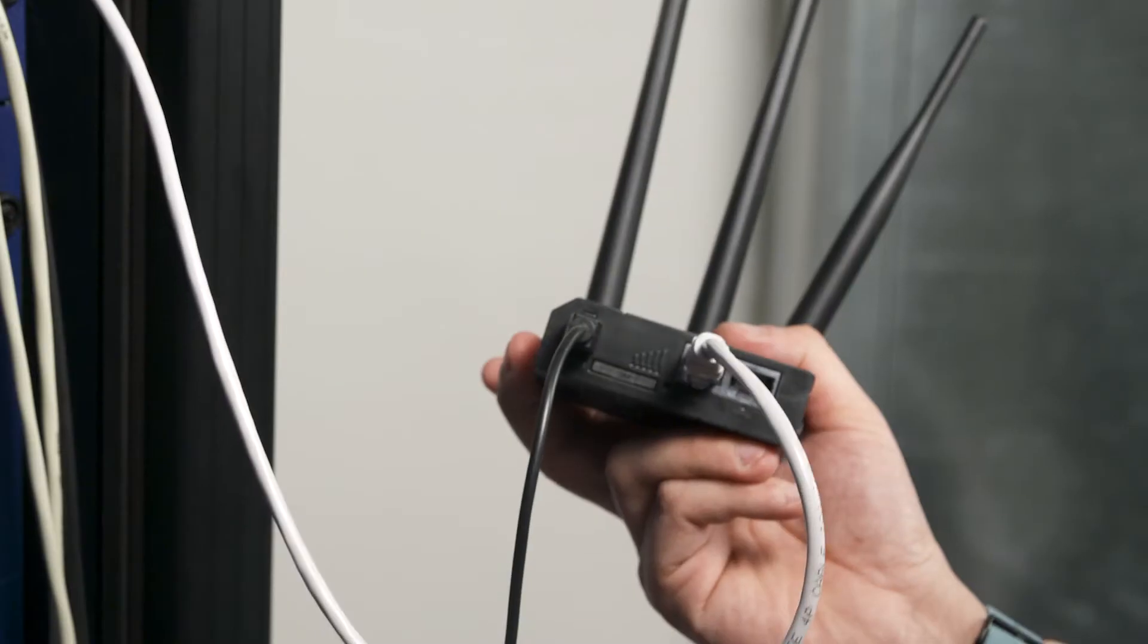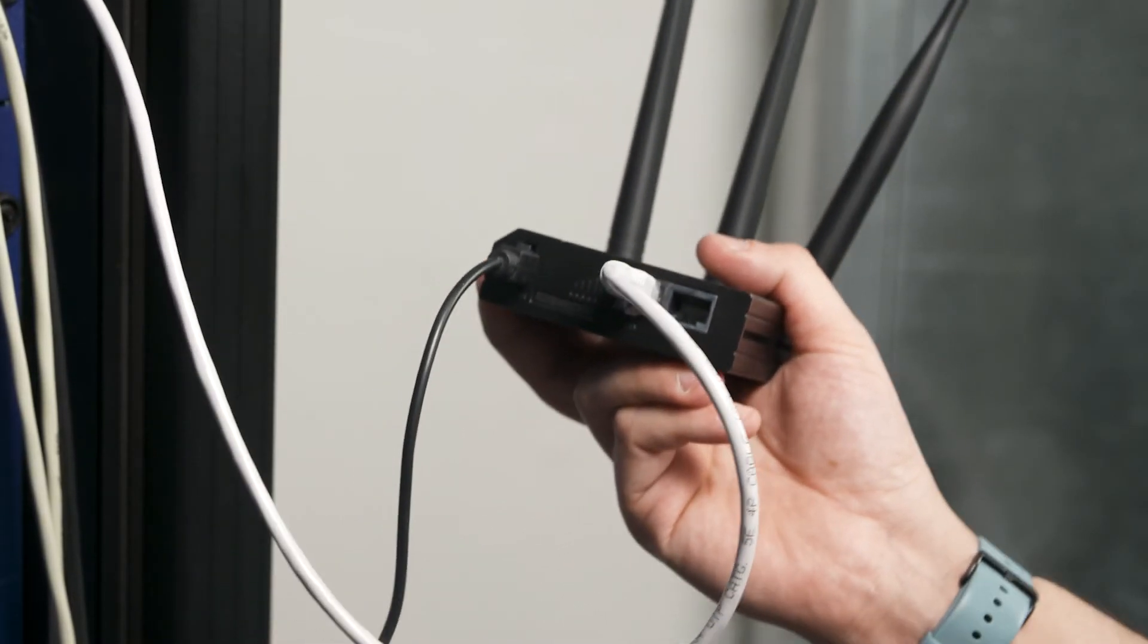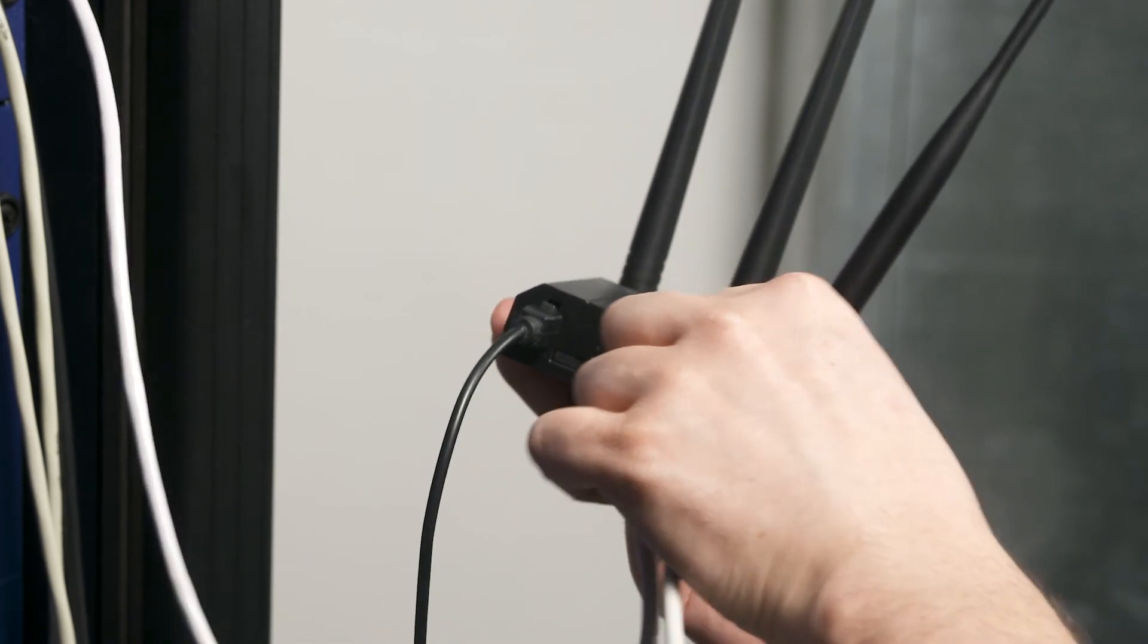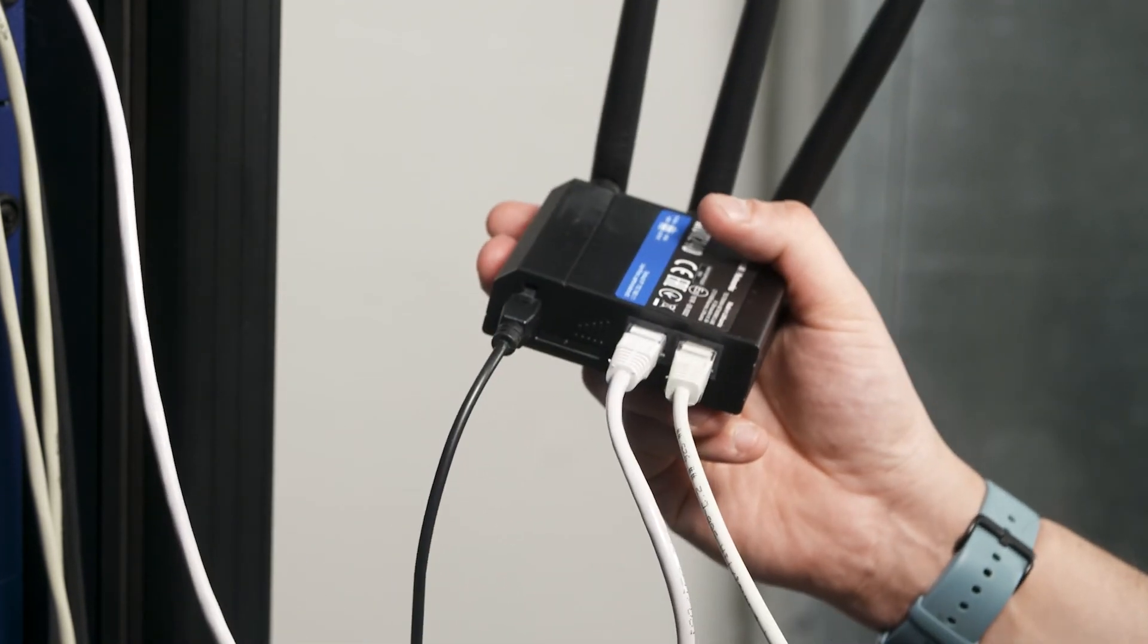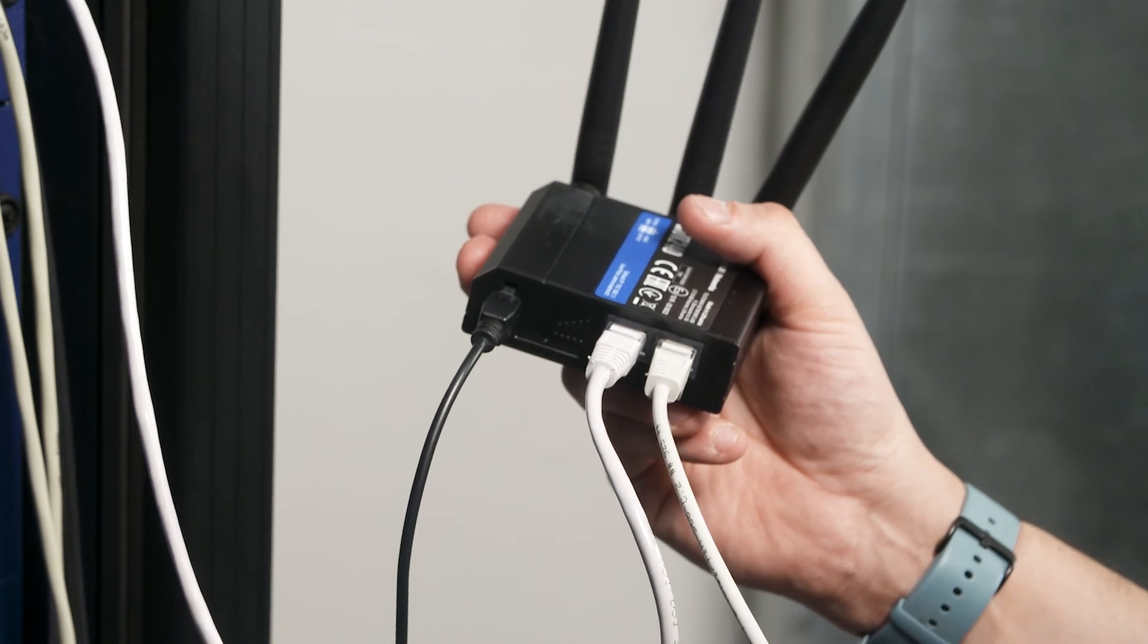In case GSM connectivity is poor in your location, please connect a firewall-free Ethernet connection to the port on the right-hand side. The router should be placed on top of the cabinet.